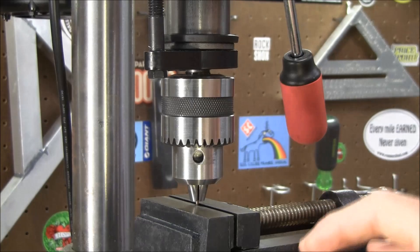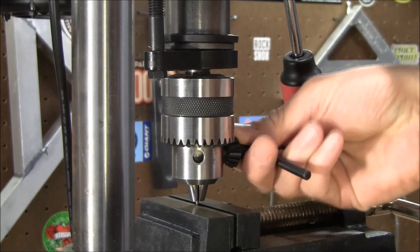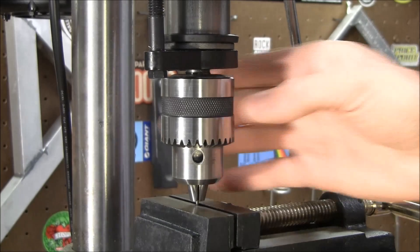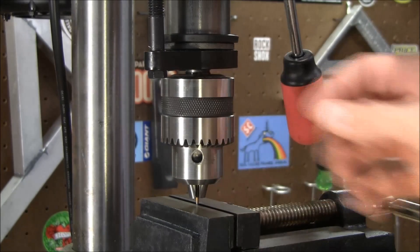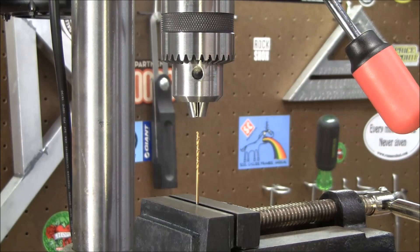At this point, you would secure the vise to the base of the drill press. I've already done that. Loosen up the chuck and slowly raise it back up off of the bit. It's important you don't let the chuck fly up. It will knock everything out of alignment if you do.